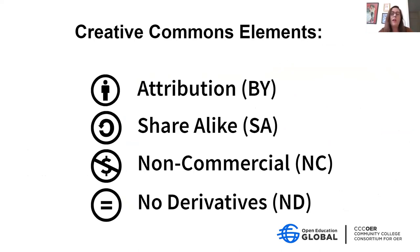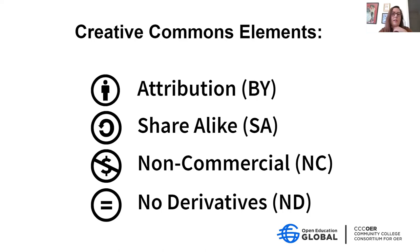The first element, which every Creative Commons license has, is Attribution. This means you have to give credit to the creator — that's the minimal thing you have to do when sharing something with a Creative Commons license. You'll see this as CC BY in abbreviation, or as a little person icon, and it simply means give credit.